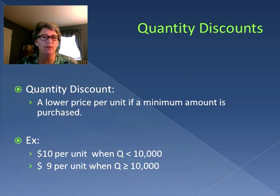A quantity discount is what happens when your supplier says I can give it to you for a lower price as long as you order a minimum amount. For example, it's normally ten dollars per unit, but if you order at least ten thousand of them they'll drop the price to nine dollars. That's an example of a quantity discount.